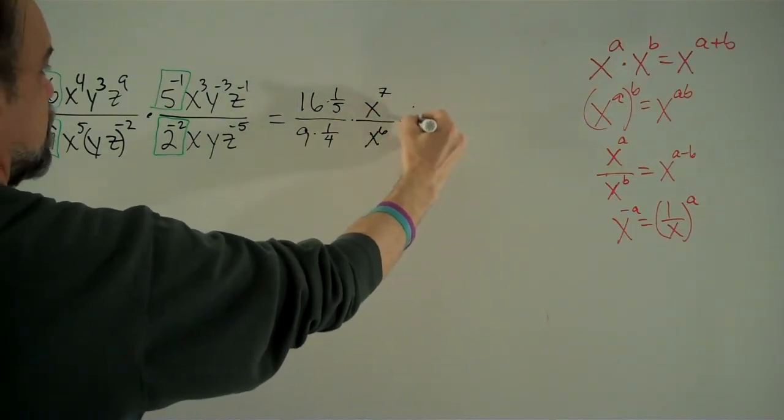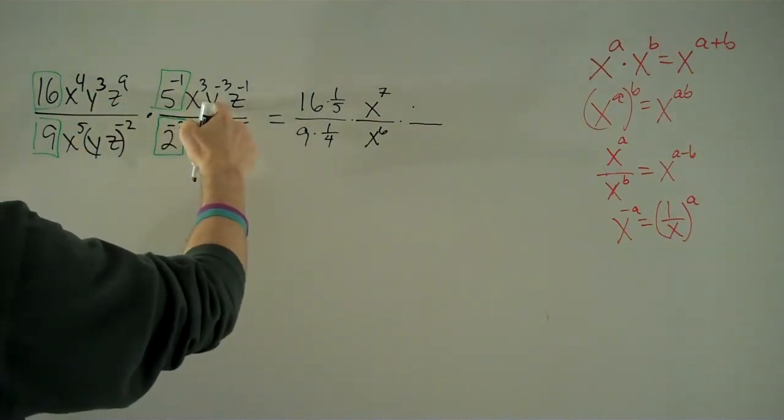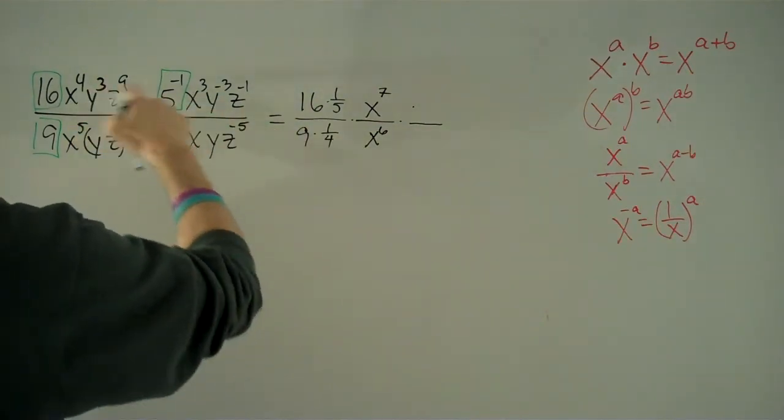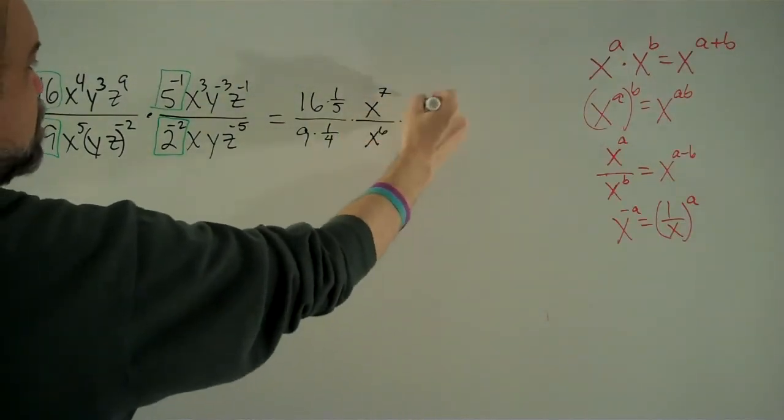And now we've got, let's look at our y's. y cubed times y to the negative 3, that's y to the 3 minus 3 is y to the 0 power, and that's just 1.